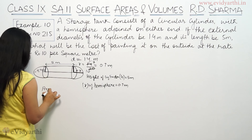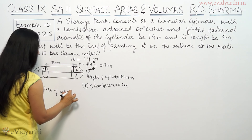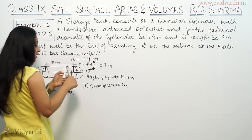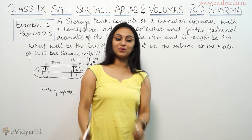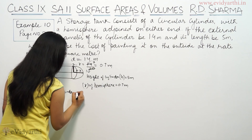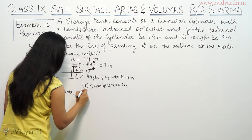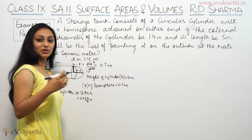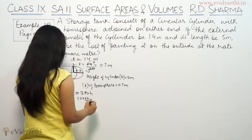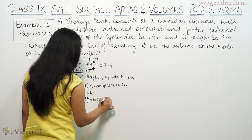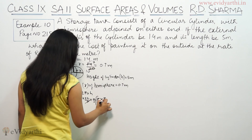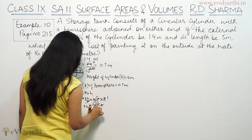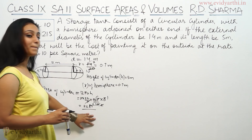First, we calculate the area of the cylinder. We are doing only the curved surface area — we don't include the ends. Curved surface area of cylinder equals 2πRH. So, 2 × (22/7) × 0.7 × 5. The 7s cancel, giving 2 × 22 × 0.1 × 5, which equals 22 square meters. This is our curved surface area of the cylinder: 22 square meters.